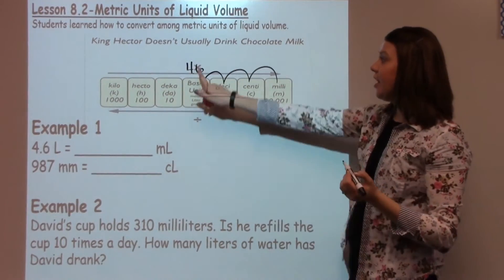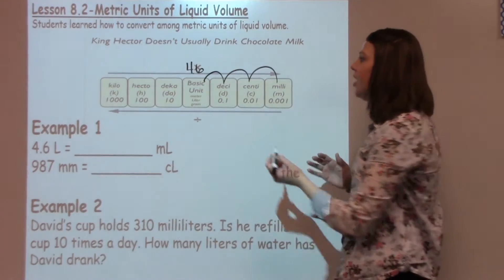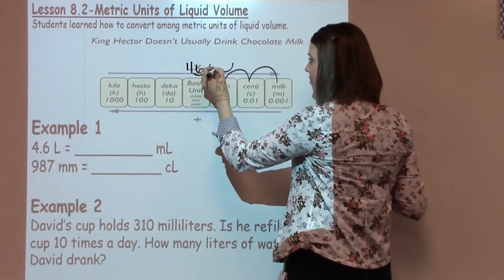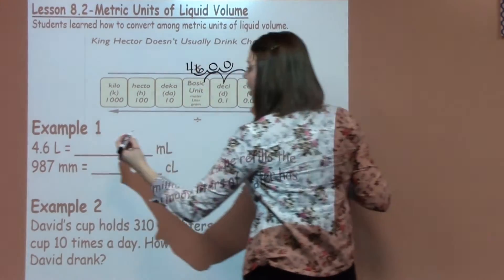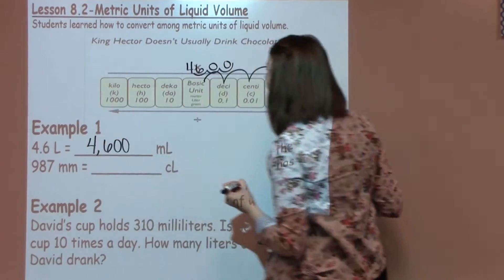I know I'm going to be shifting. I'm going to be using multiplication, so my answer is going to be getting larger. So I'm going to shift 1, 2, 3 spots with my decimal for an answer of 4,600 milliliters.